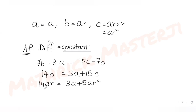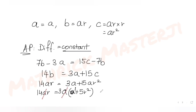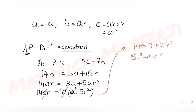Dividing through, the value of a cancels out, leaving an equation purely in terms of r. We get 14r equals 3 plus 15r², which rearranges to 15r² minus 14r plus 3 equals 0. Now we need two numbers whose product is 45 (15 times 3) and whose sum is 14.